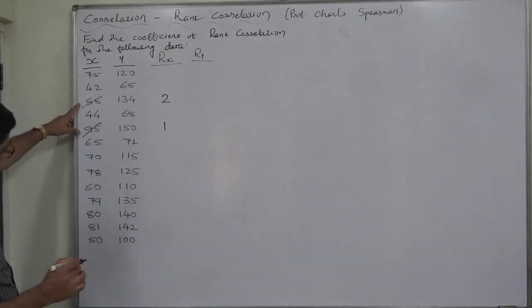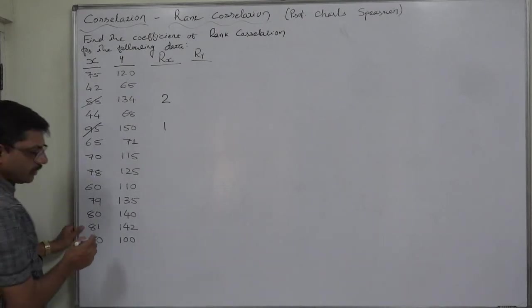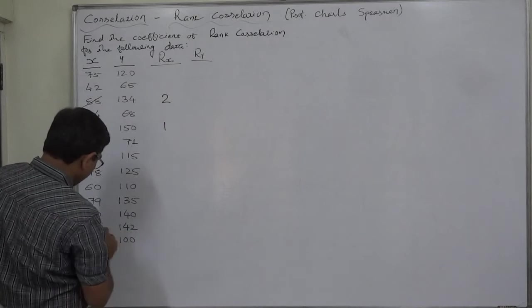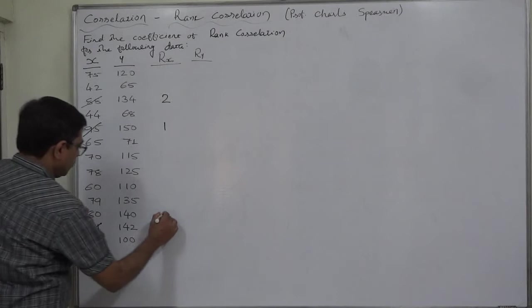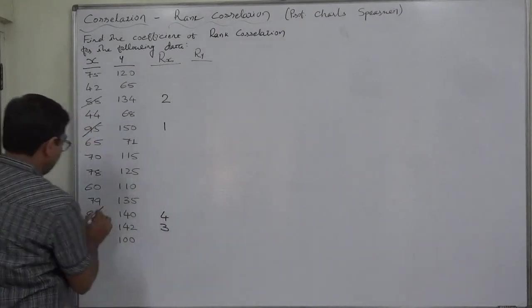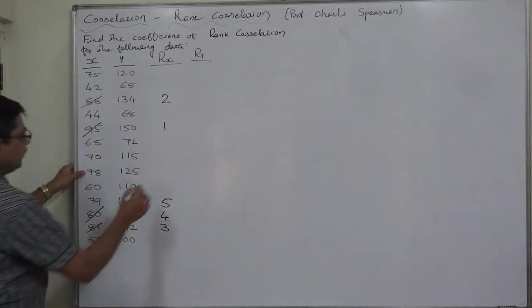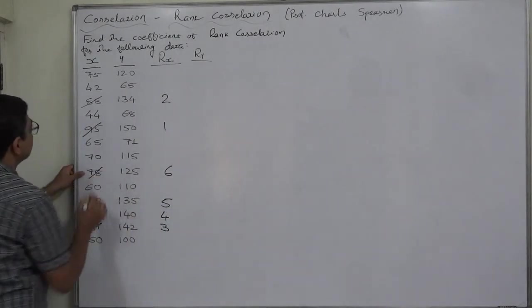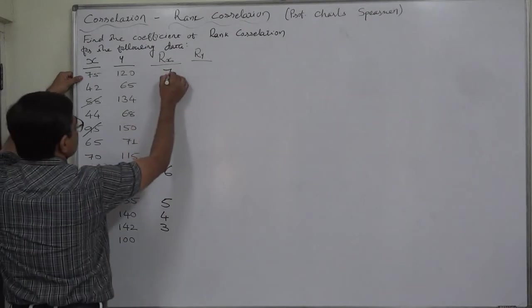After 88, is there 87? No. Is there 86? No. 85, 84, 83, 82, 81. 81 is there. It will be assigned rank 3. 84, 79, 5, 78, 6, 77, 76. 75 is there. It will be assigned 7th rank.